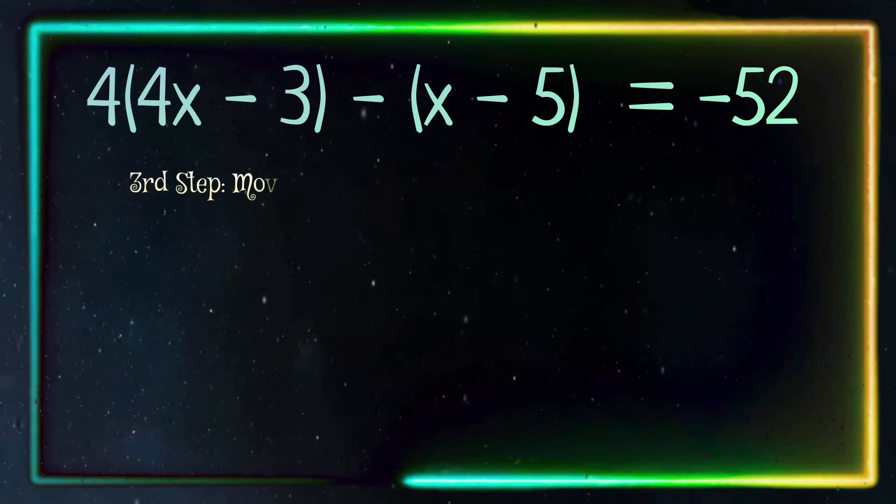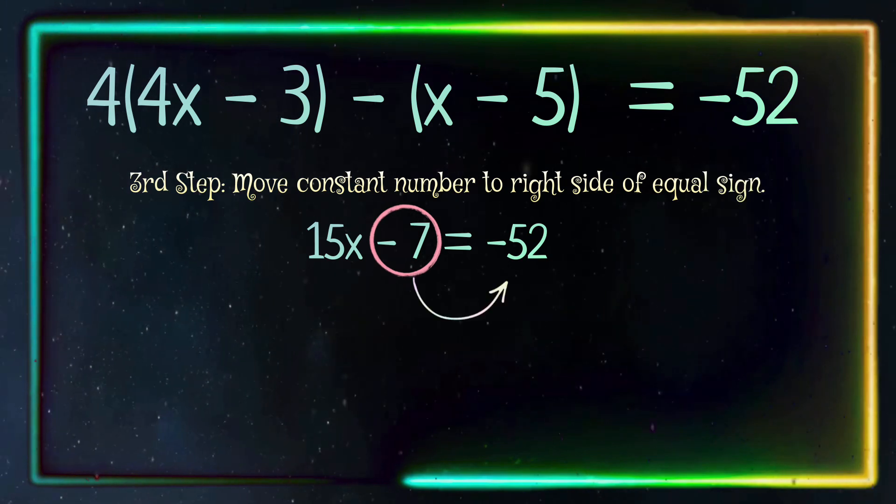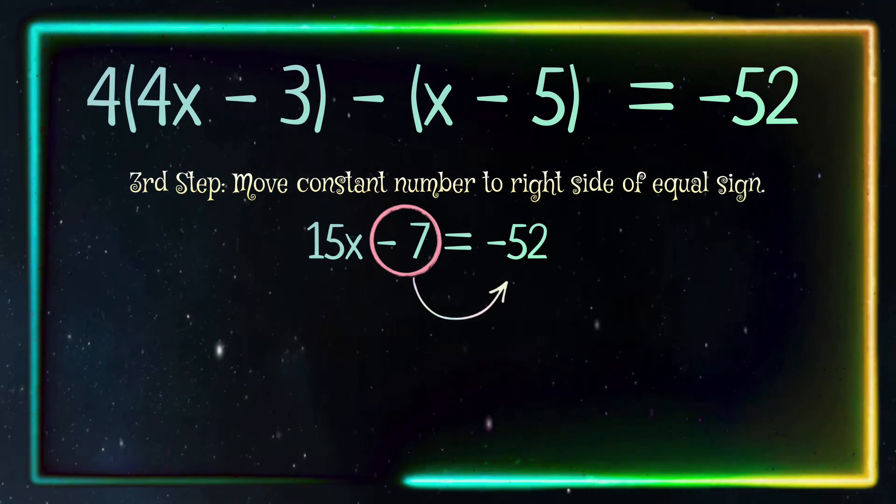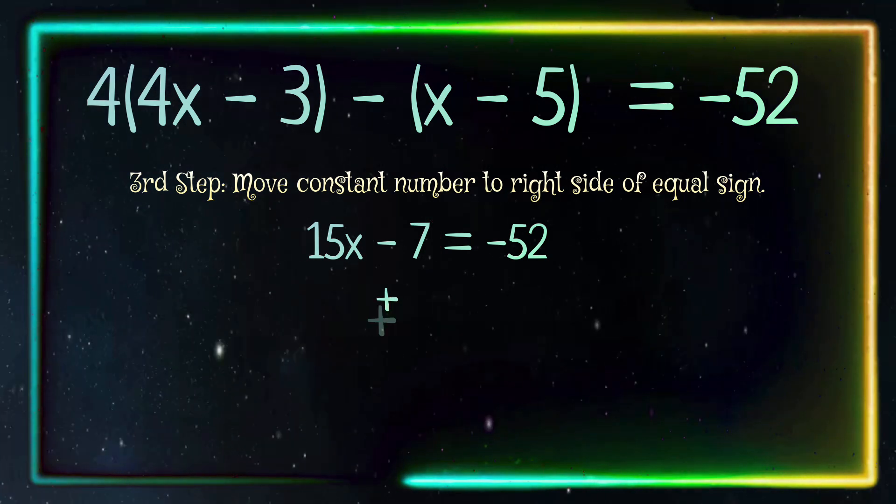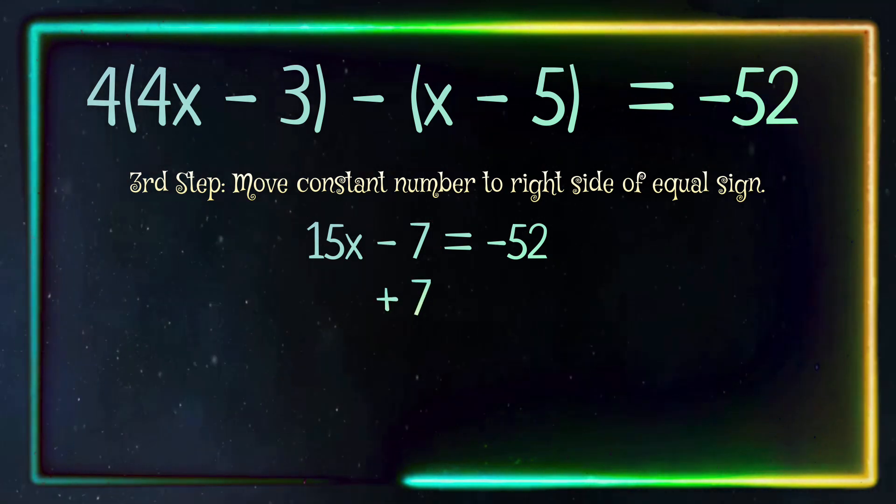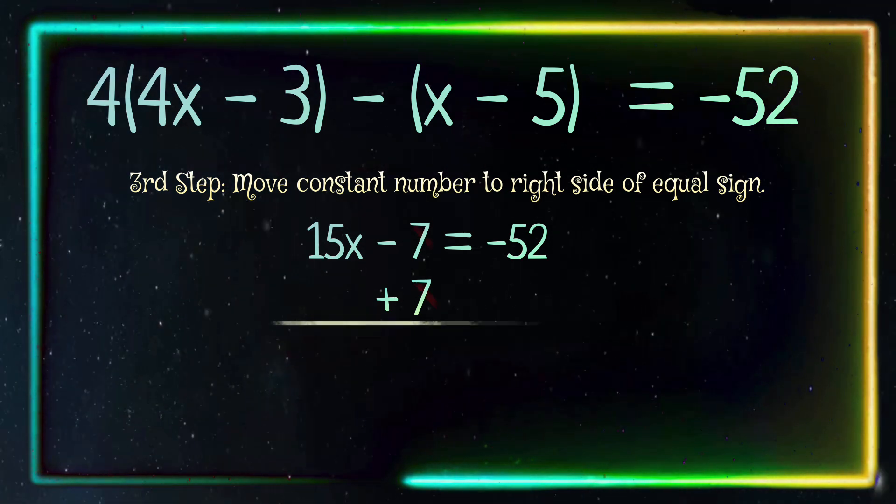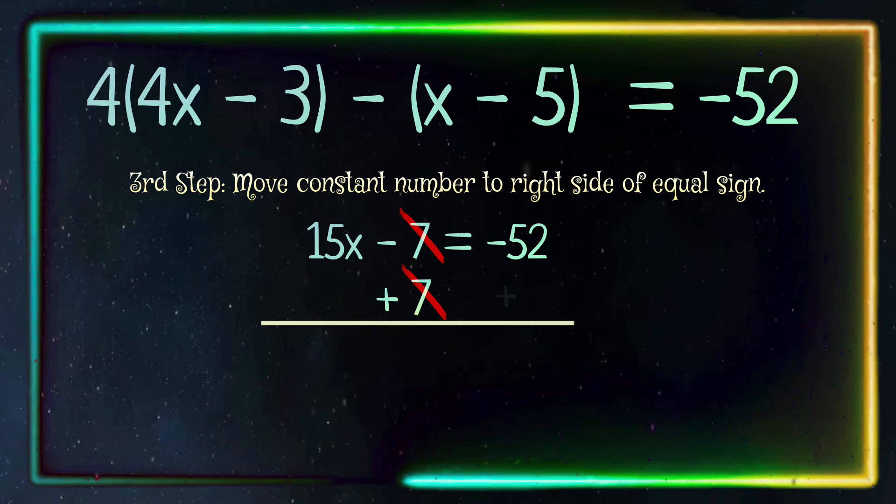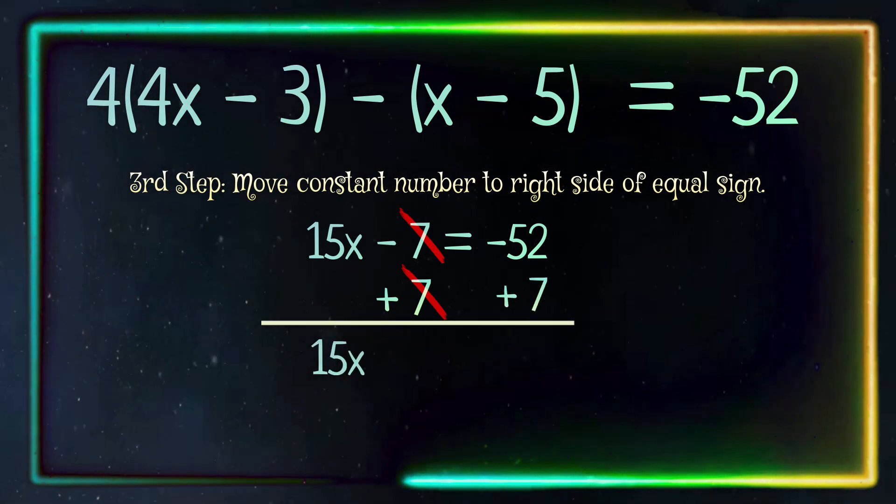So now we will move the constant number which is negative 7 to the other side of the equal sign in order to get the x by itself. Let's cancel the negative 7 out on this side by using the inverse which is positive 7. And what we do to one side we have to do to the other. So let's add 7 to negative 52 and that gives us negative 45.